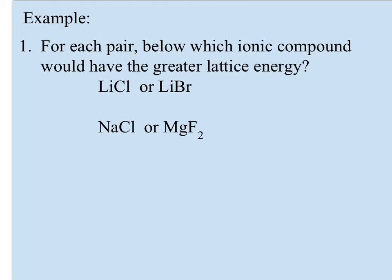For each pair, which ionic compound would have the greater lattice energy? LiCl and LiBr both contain Li, so that's not a factor. You have to look at Cl and Br — they're in the same family, but Br is further down or bigger. Cl is the smaller atom, so LiCl will have the greater lattice energy or be harder to take apart.